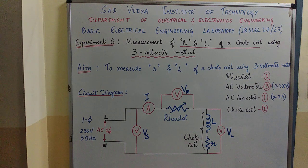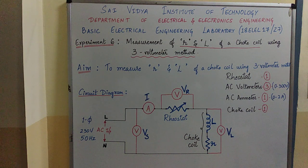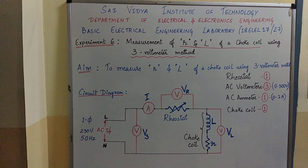Now, what is a choke coil? In electronics, a choke is an inductance coil of very small resistance used to block higher frequency alternating current and provide sufficient energy for glowing in a fluorescent tube. A choke coil is represented by a pure inductance L in series with equivalent resistance r. The choke coil parameters can be measured using two methods: the 3 voltmeter method and the 3 ammeter method.